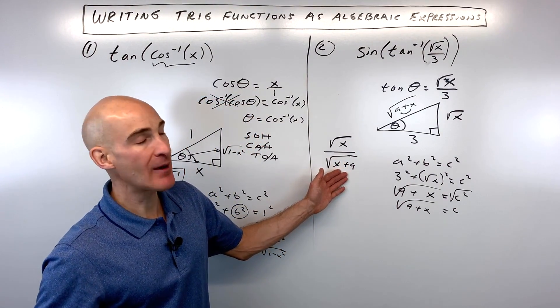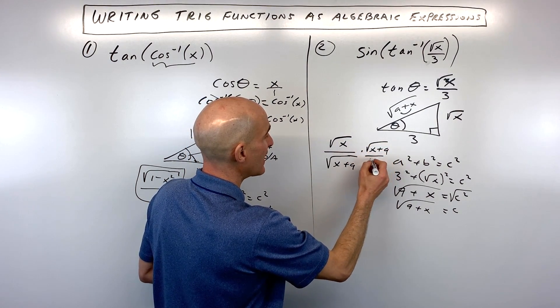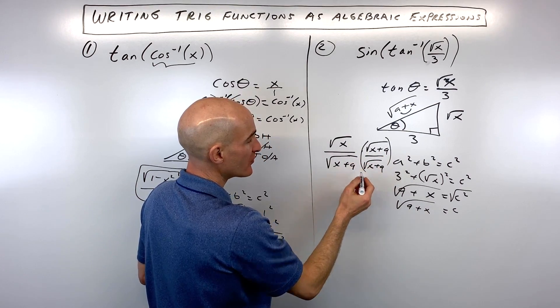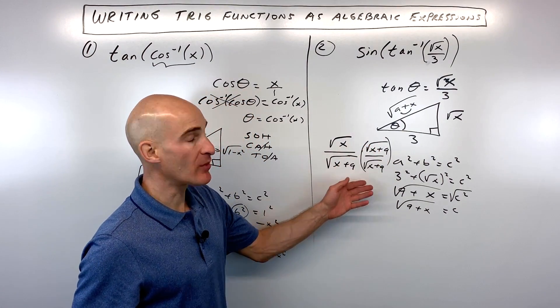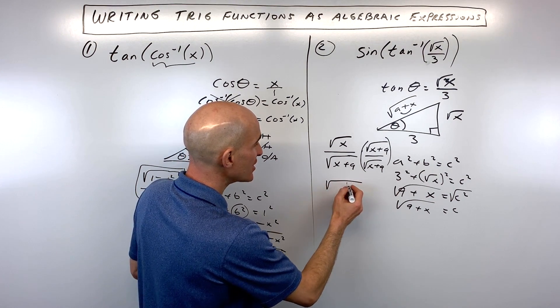Now you might not want to leave the square root in the denominator like this. So let's go ahead and rationalize by multiplying by square root of x plus nine over square root of x plus nine. We're multiplying the numerator and the denominator by the same thing. So it's just like multiplying by one. So it doesn't change the value. It's just going to change the way that this looks.